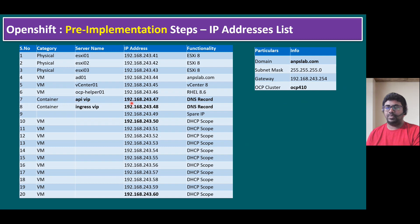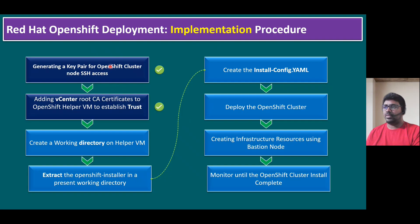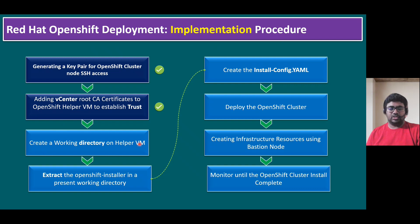For the API virtual IP, which ends with 47, and the Ingress virtual IP ends with 48. Within our implementation procedure, we completed the first two steps. The third step is to create a working directory on Helper VM. So let's log into our lab system.